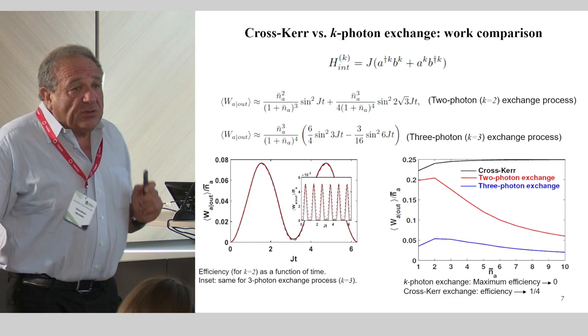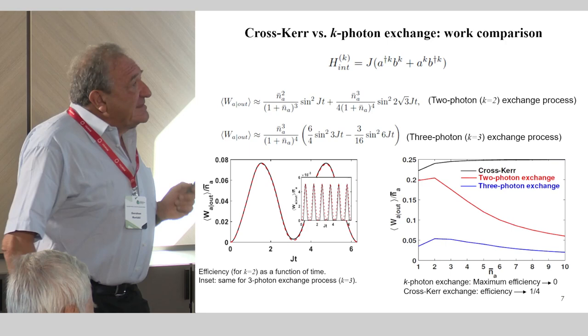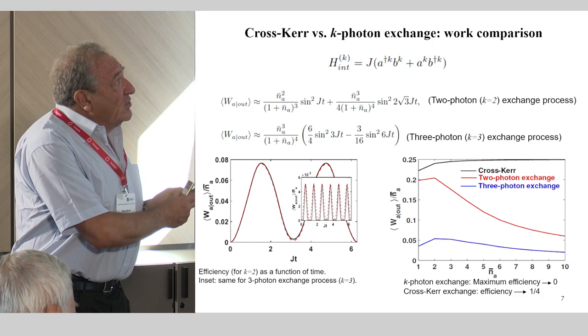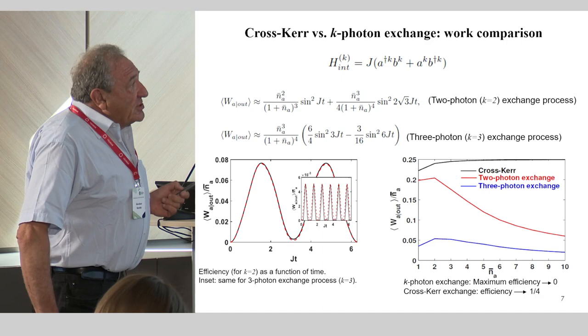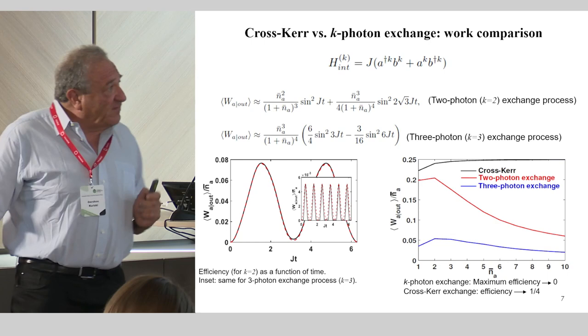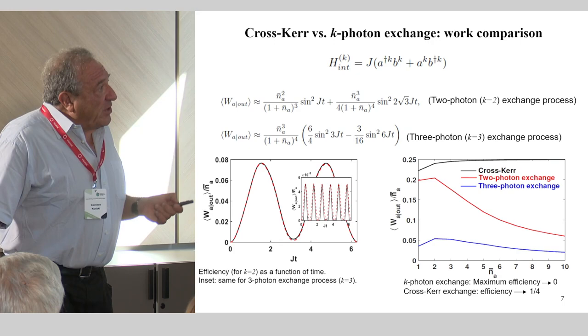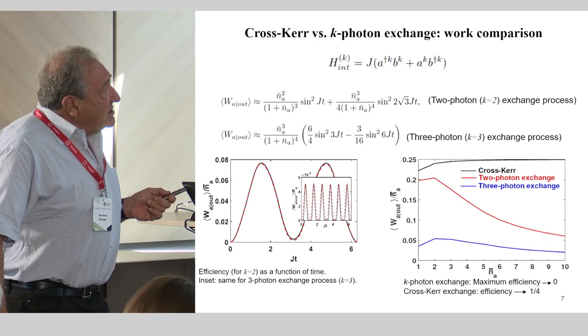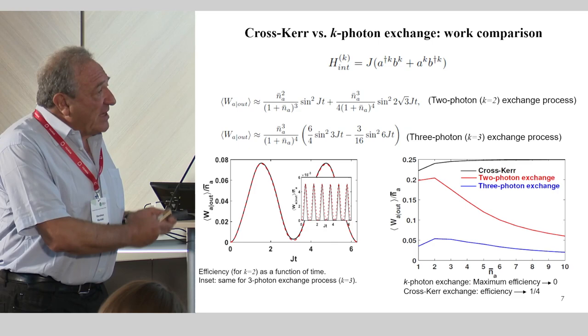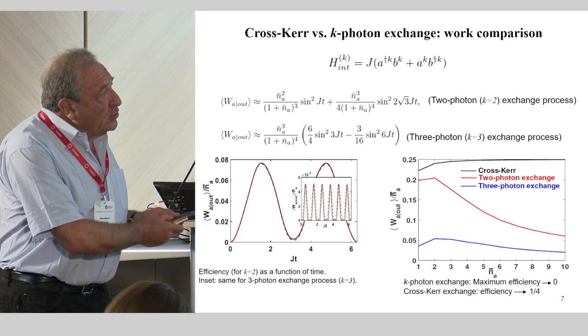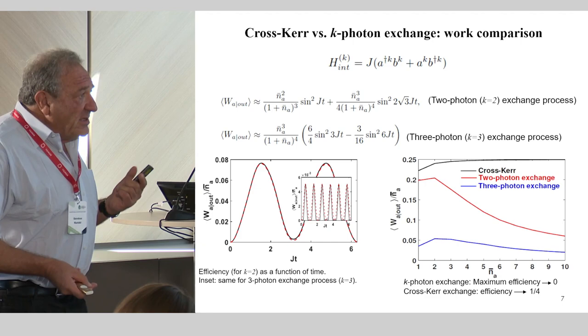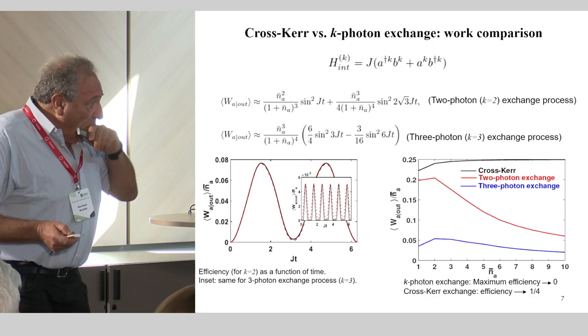You can do more with that because you can use this to discriminate between different nonlinear processes. For example, if instead of this cross-Kerr nonlinearity, I have a direct photon exchange of kth order, k can be 2 or 3 or 4, then I can calculate that the oscillations of the work output strongly depend on the number of photons involved in such an exchange. The higher the photon number exchange, the faster is the oscillation of the work output. So this is one signature you can use. Another is the dependence of the maximum efficiency on the intensity. Whereas for cross-Kerr it tends to one quarter in the limit of high intensity, for two or three photon exchange, it goes down with intensity. This is a strong signature that can distinguish between the two.